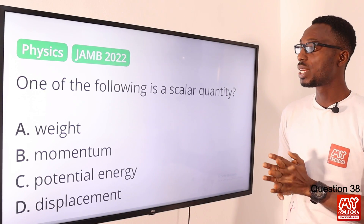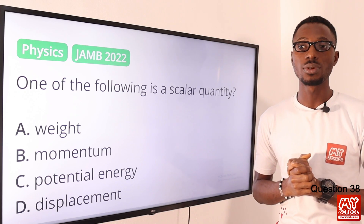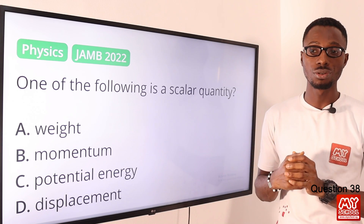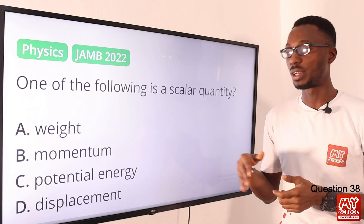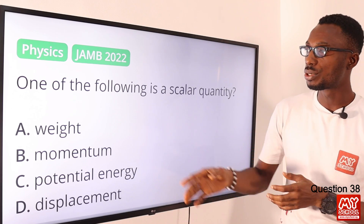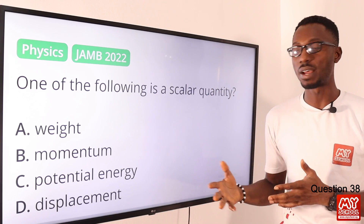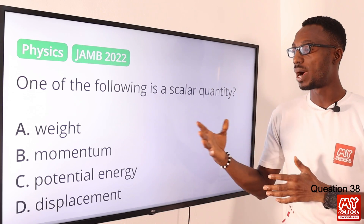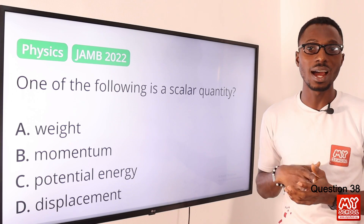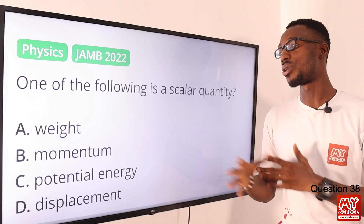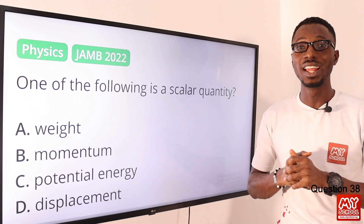Question 38. One of the following is a scalar quantity. A scalar quantity has magnitude but no direction, while a vector quantity has both magnitude and direction. Examples of vectors include weight, momentum, and displacement. Energy is generally taken as a scalar quantity. The correct option is option C for potential energy.